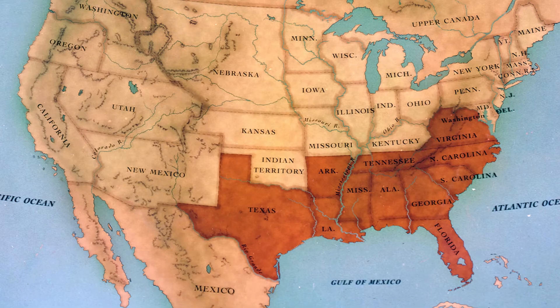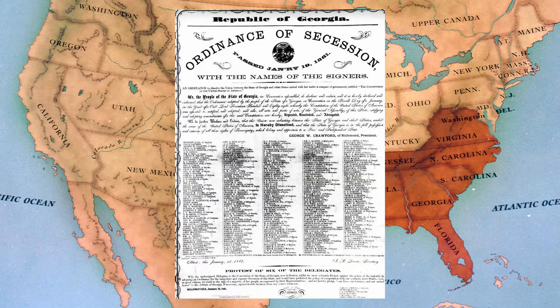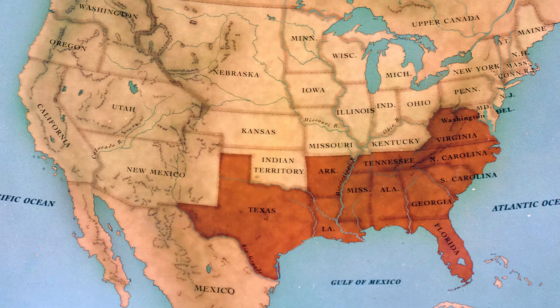After each state had seceded, the respective governments would issue several ordinances of secession. With each of these documents, they would list the reasons for the state leaving the Union. Four southern states — South Carolina, Mississippi, Georgia, and Texas — all stated their reasons for secession in far greater detail.